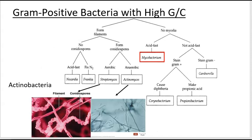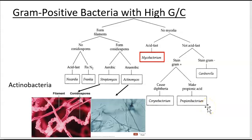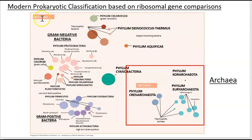Gram-positive bacteria are divided into two groups based on DNA composition — the percentage of G's and C's in their chromosomes, giving low or high GC content. The high GC group includes acid-fast positive bacteria such as Mycobacterium, which cause leprosy and tuberculosis. There are also organisms lacking a cell wall — including a genus that causes acne and another used to make Swiss cheese — and filamentous bacteria that look like molds and have spores on their ends.